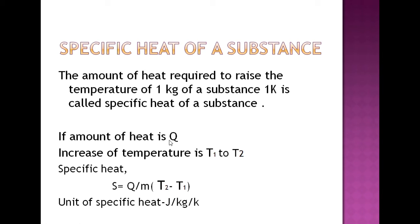If the amount of heat is denoted by Q, and the increase in temperature is from initial T1 to final temperature T2, then specific heat S equals Q divided by m times (T2 minus T1). T2 minus T1 can also be denoted by delta theta. The unit of specific heat is Joule per kg per Kelvin.